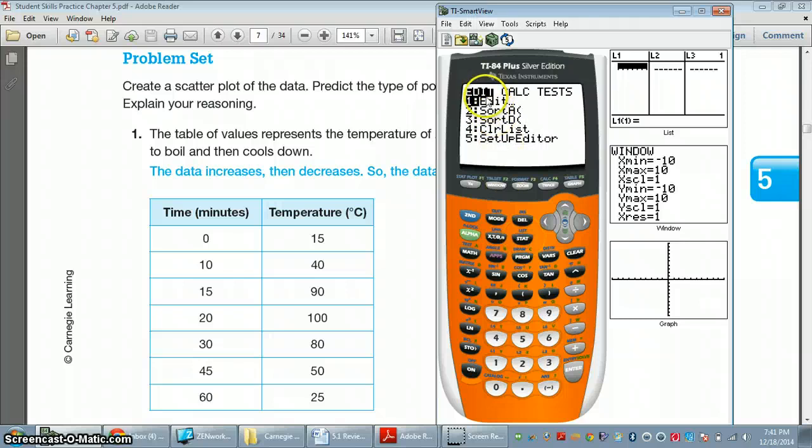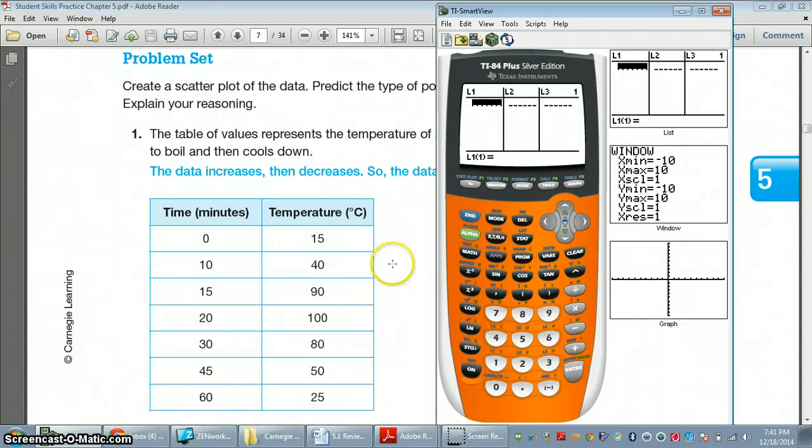And in the stat button, the first option is edit. And edit just means that you can enter in lists. So in list 1, we're going to enter in all of the minutes in this situation. So you enter in 0, 10, 15, 20, 30, 45, and 60 in list 1.